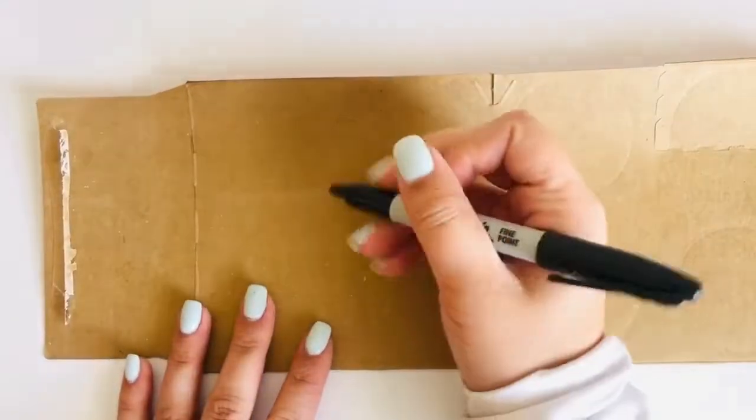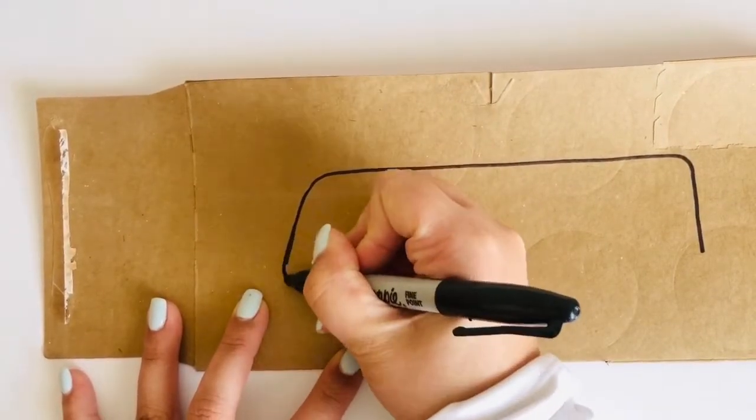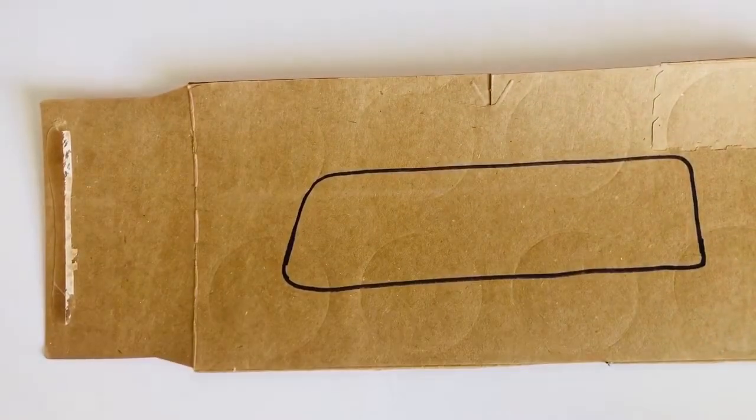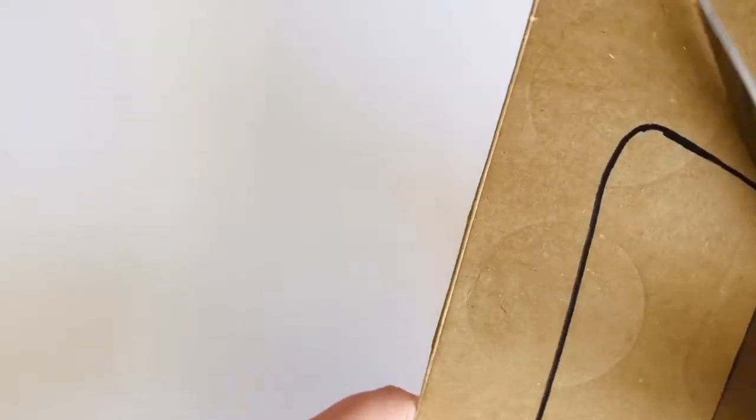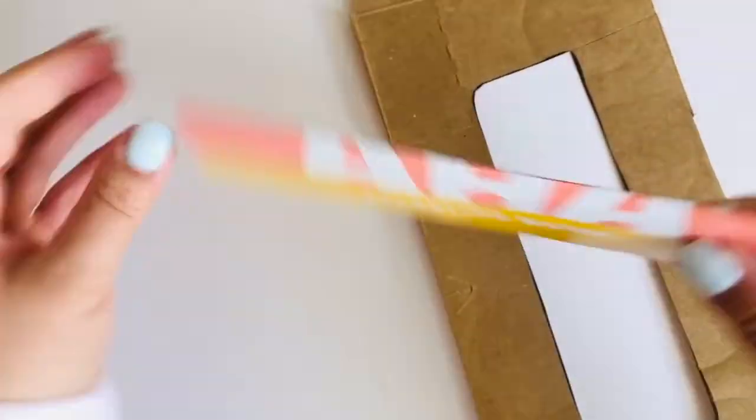First we'll make the fuselage, the body of the plane. Flip your cardboard over to the side without pictures. Draw what you want it to look like. Once you like your body design, cut it out. Save your cardboard scraps though. You might need them along the way.